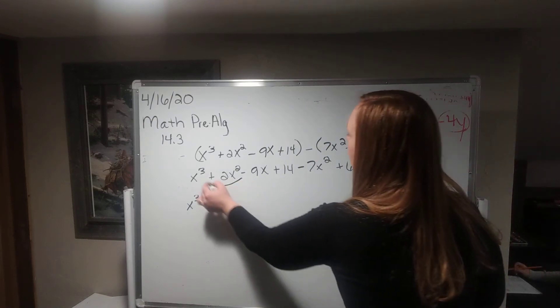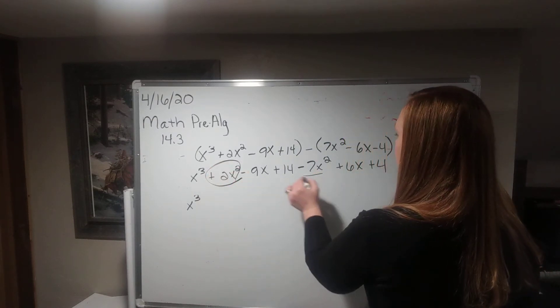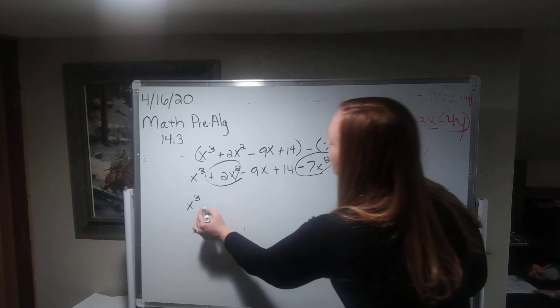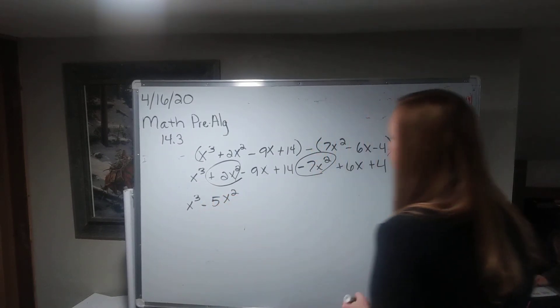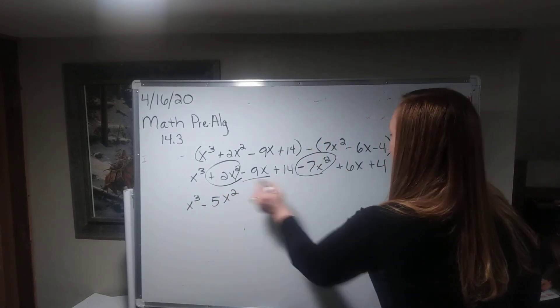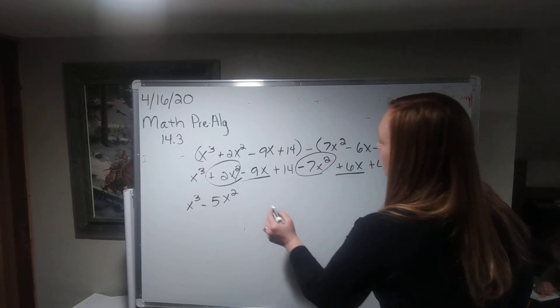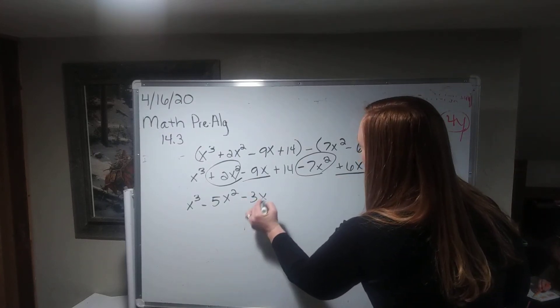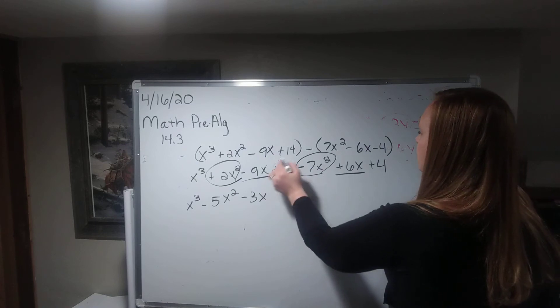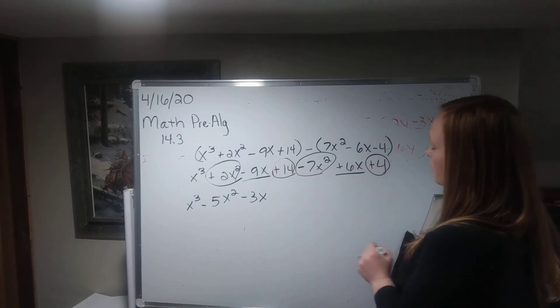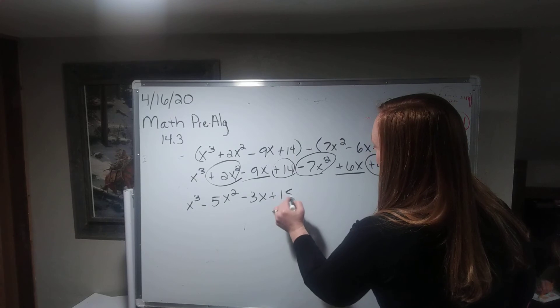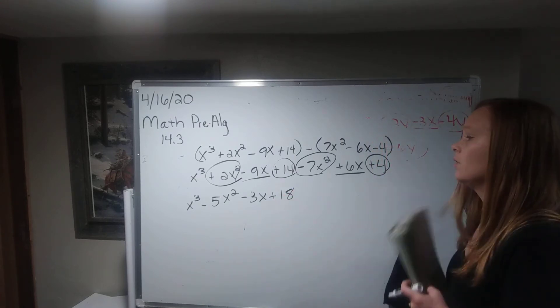Now I see 2x squared and negative 7x squared. So minus 5x squared. Combine my x's here, and I get minus 3x. And then lastly, my numbers here plus 18. Okay. All right. One last problem.